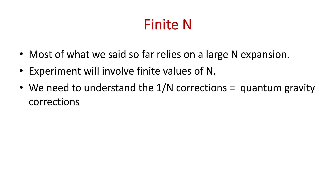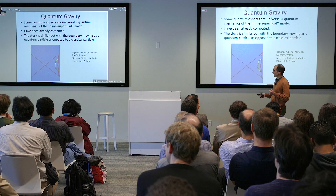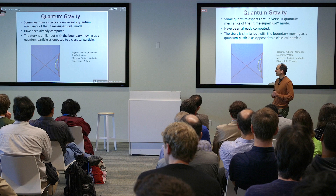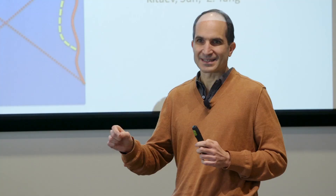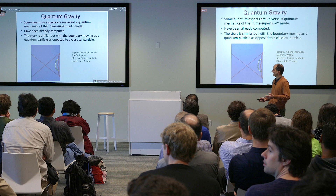Most of what I've said is simplest when we take very large n, but experiments will be done at finite n, and it's important to understand the corrections that exist when you go to finite n. In the gravity picture, those corrections involve quantum gravity corrections. For these very simple systems, the important part of these corrections comes from the quantum corrections of the time superfluid mode—this particular quantum mechanical mode—and you can compute them. The quantum corrections amount to treating the boundary position as a quantum mechanical degree of freedom: a particle moving in AdS2 in this curved spacetime. You can quantize this solvable problem and find the quantum corrections.